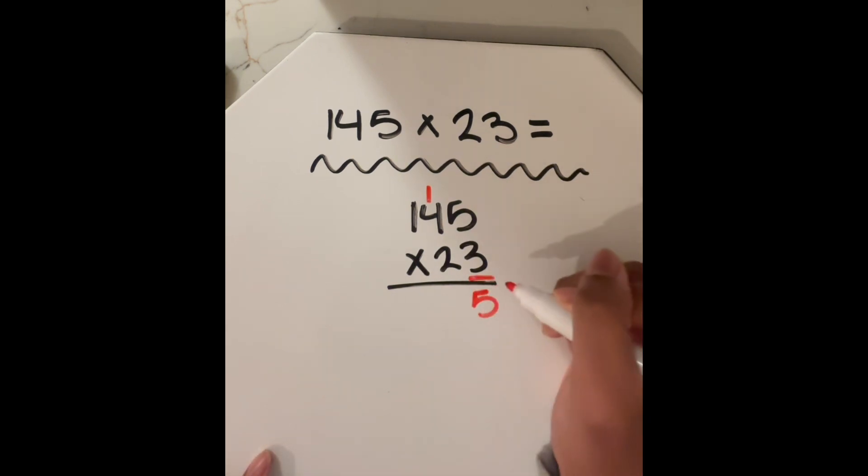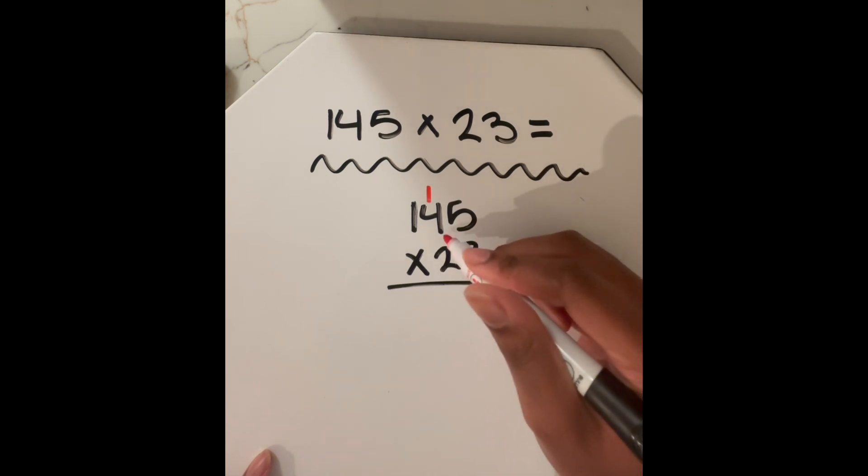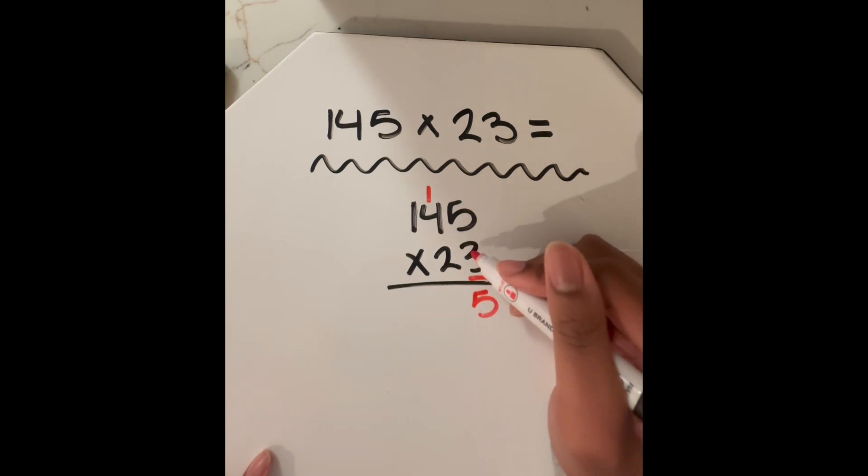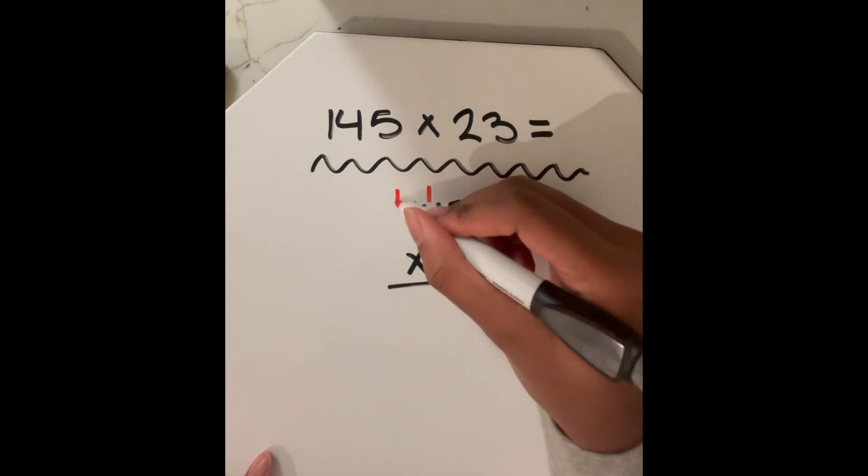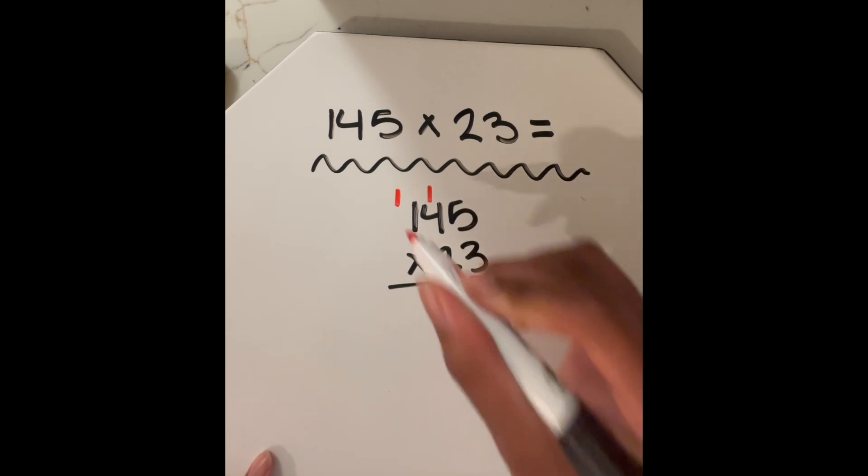Now we're still looking at this three. And since we've already multiplied it by the number right above it, we're going to look at the number diagonally above it, this four. So we're going to multiply three times four. We know that's 12, but we also have to include this one up here. So three times four is 12, we're going to add that one onto it. So 12 plus one is 13. So we're going to put a one up here and a three down here for 13.